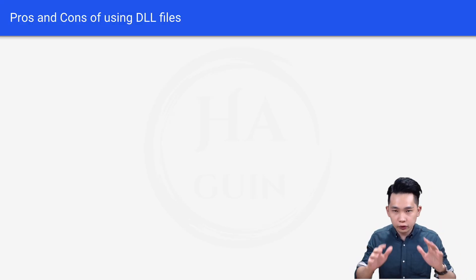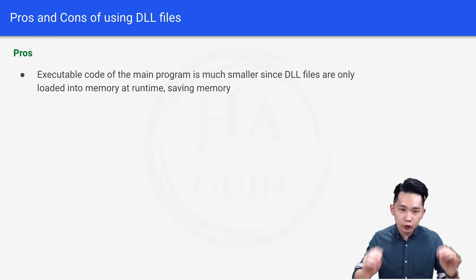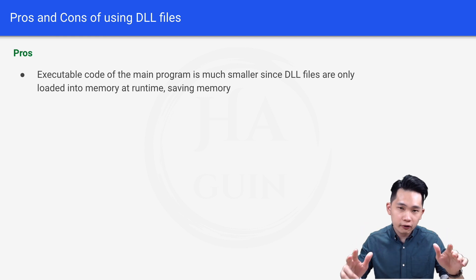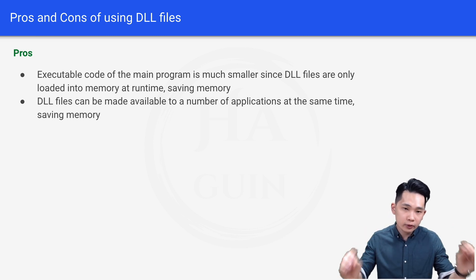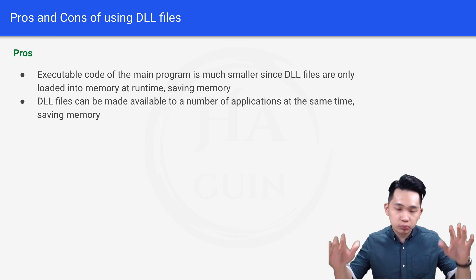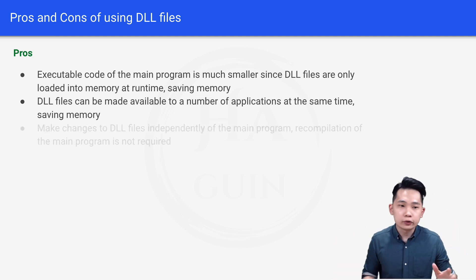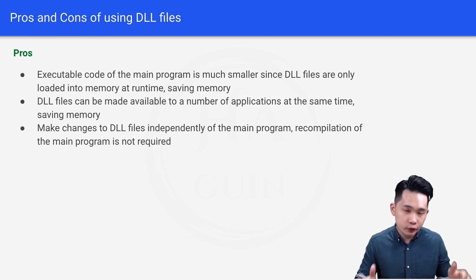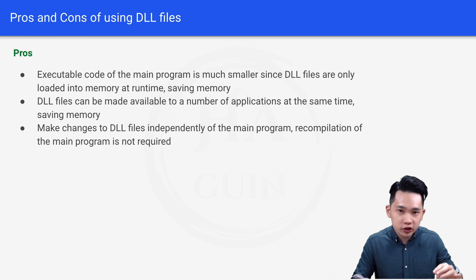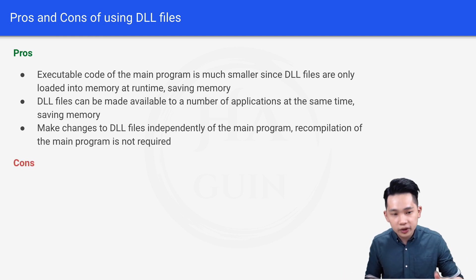The pros of using DLL files: first, the executable code of the main program is much smaller since DLL files are only loaded into memory at runtime, saving memory. Second, DLL files can be shared by multiple applications simultaneously — if 10 programs need a print function, only one copy of the DLL is needed instead of 10. Third, changes can be made to DLL files independently of the main program, so recompilation is not required — unlike static libraries where you must recompile every time.